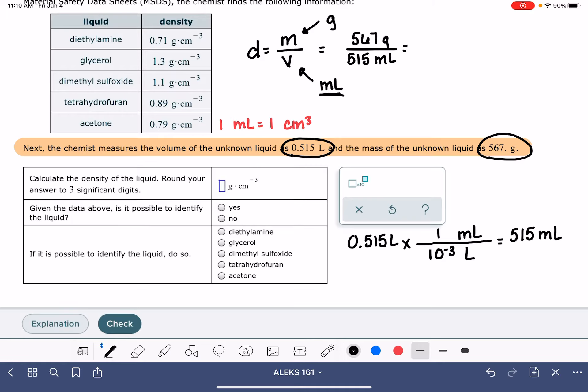567 divided by 515 is 1.10097 grams per milliliter. So that's our density. It wants us to enter into this box. Notice that Aleks is using the units grams per centimeter to the negative three. One milliliter is equal to one cubic centimeter. So that's the same unit, just another way of expressing these grams per milliliter.